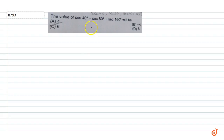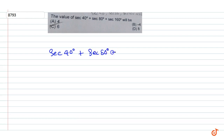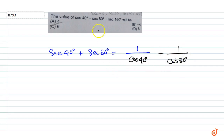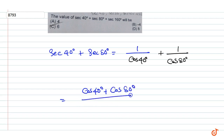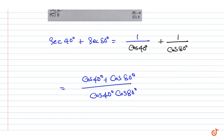In this question, the value of sec(40°) + sec(80°) + sec(180°) will be what. Here we have sec(40°) + sec(80°), which equals 1/cos(40°) + 1/cos(80°), equal to cos(40°) + cos(80°) upon cos(40°)·cos(80°).